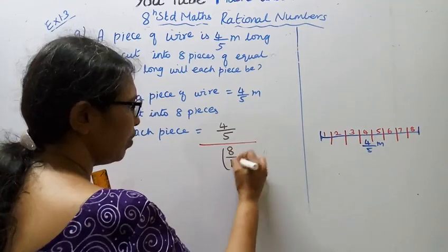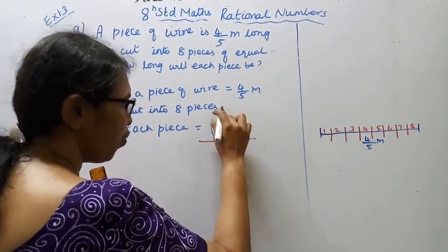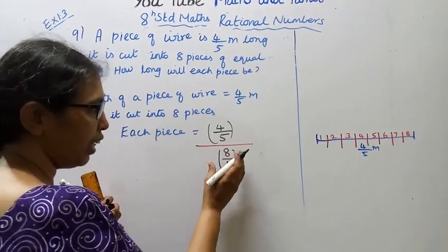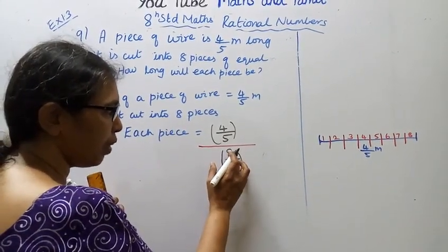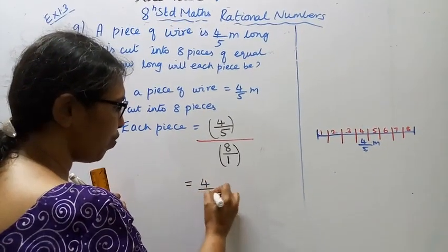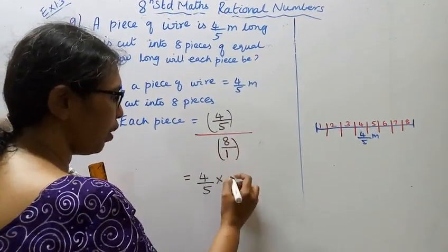Many students make a mistake here with 4 by 5 divided by 8. When dividing, we need to take the reciprocal. So 4 by 5 multiplied by 1 by 8.